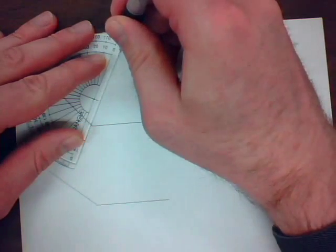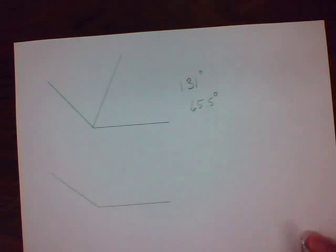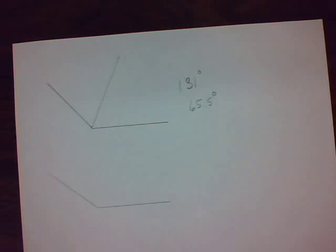Connect the vertex to the point I created. Whoops, that was a little bit off. But that would be one way of bisecting it.